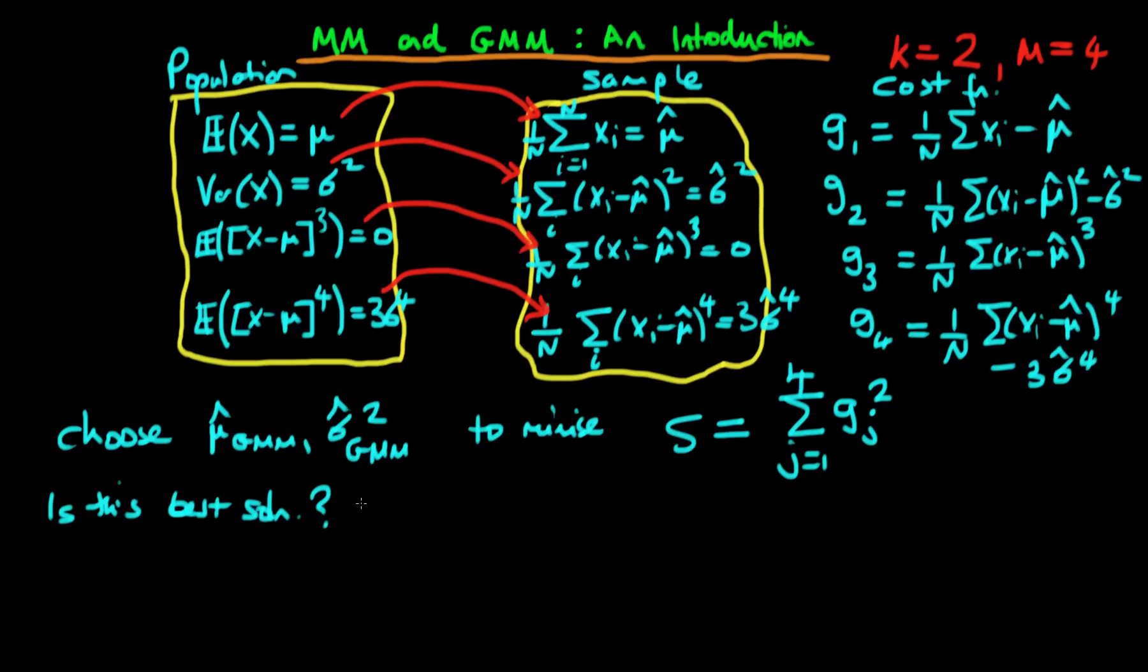And the answer would be that actually we can do better than just minimizing the sum of square costs, because implicitly by minimizing the sum of square costs with no weighting given to any particular moment condition, we are assuming that absolute deviations of any of these moment conditions are essentially equal.